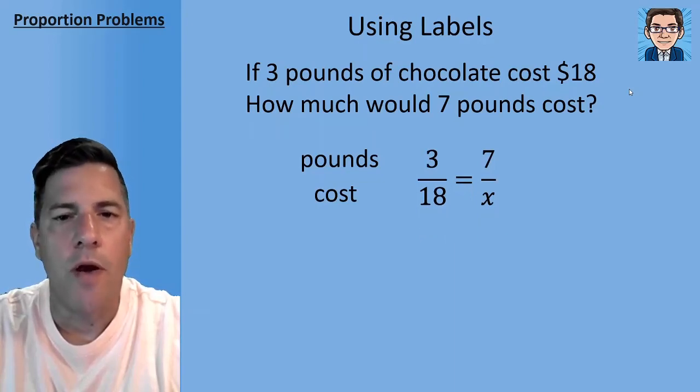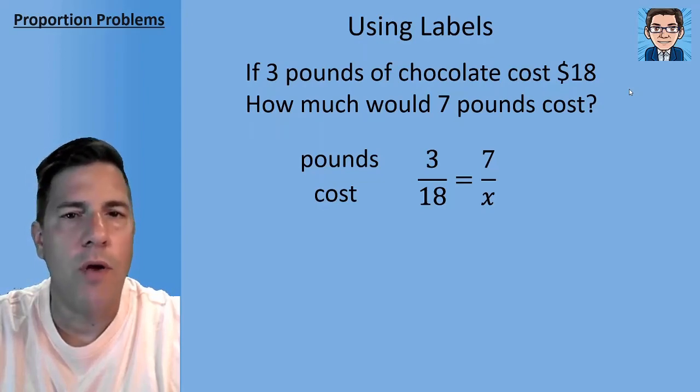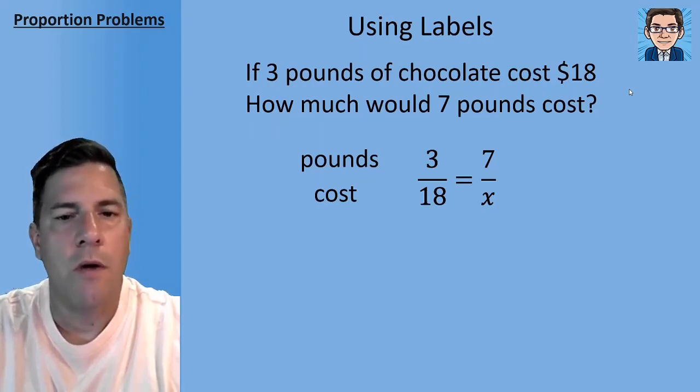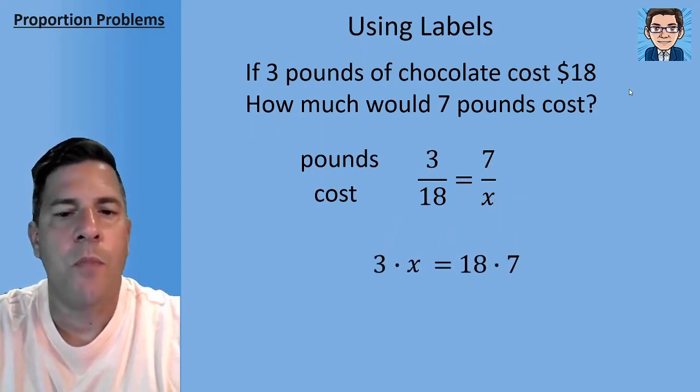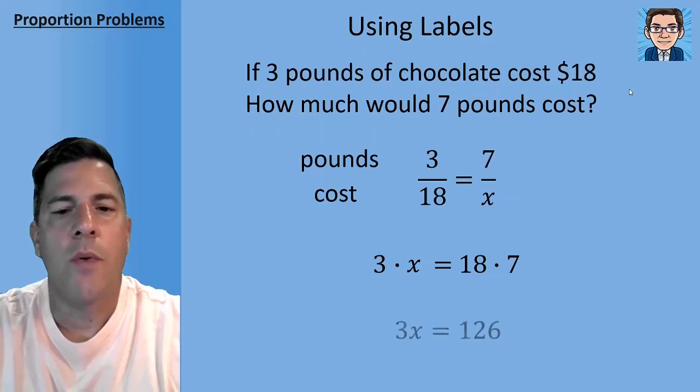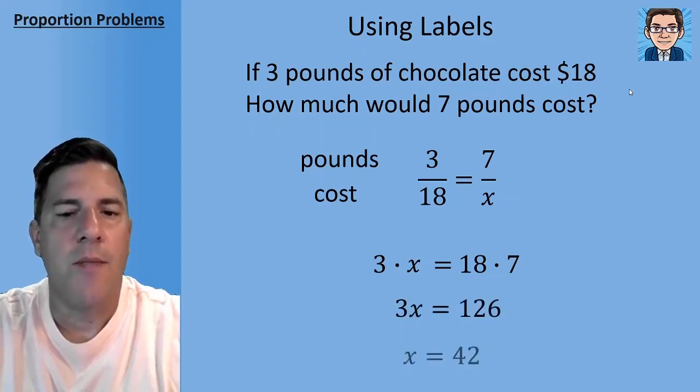So I like to write the labels, write out pounds and cost so that when I set up my proportion, I know to put three in the numerator because that's where I'm putting pounds. And 18 is my cost, so that goes in the denominator. And that's set equal to seven in the numerator because that's how many pounds and we don't know the cost. So that's where our cost is going to go in the denominator. So it really helps to write out what you're going to put in the numerator and the denominator so that you don't confuse them and you can keep them consistent. Then from there we can just cross multiply, 3 times x equals 18 times 7. So we get 3x equals 126, divide by 3 to get our final answer and that's going to be 42.